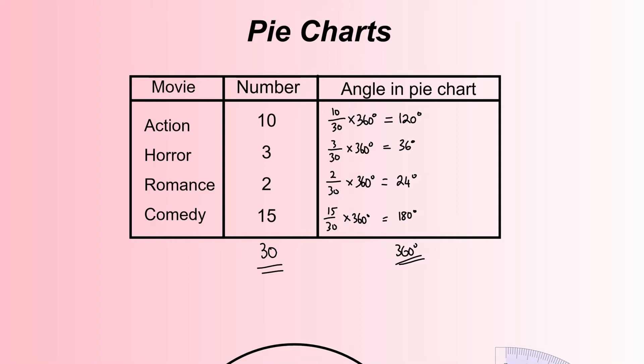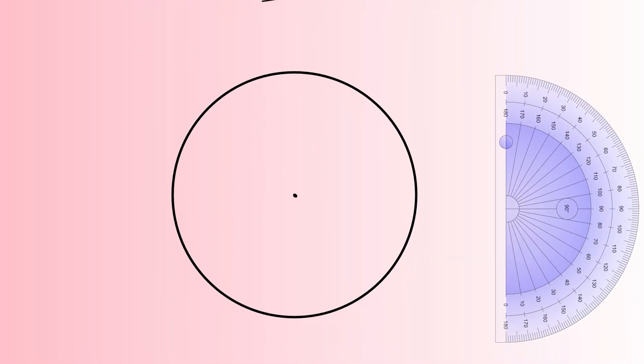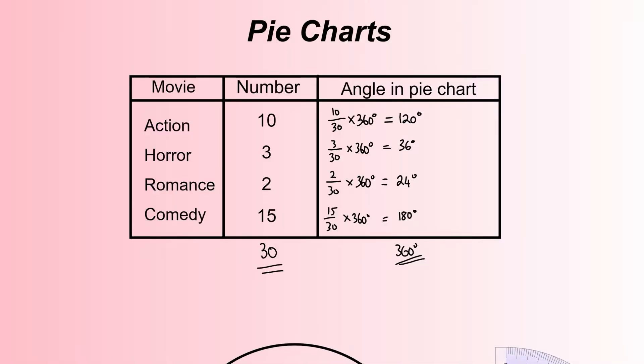When we add all these four angles up, it should give us 360 degrees because we should have all the information which should fill up the pie chart, and it does. We're now going to convert that information—those angles—and use them to draw our pie chart. We've got a protractor and a pre-drawn circle. We've got the center point of the circle already drawn.